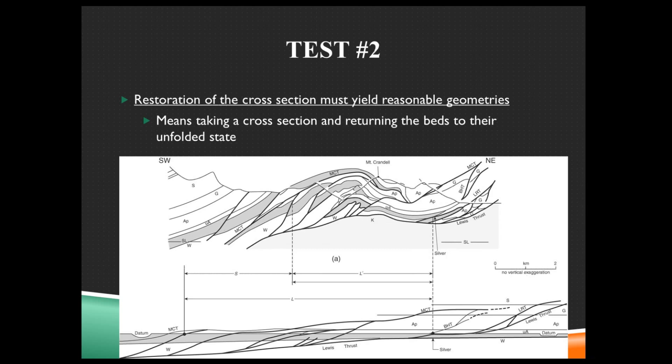The second test is that if you restore the cross section, basically taking all these faulted layers and folded layers and try to spread them back to their pre-deformed state, it should yield reasonable geometries. So if you can't take it and flatten it back out, it can't be right. If you take some Play-Doh and cut it to create a fault and you slide it along the fault, you can take it and slide it back and have it in the original position that you know is realistic because you made it out of Play-Doh. It existed.